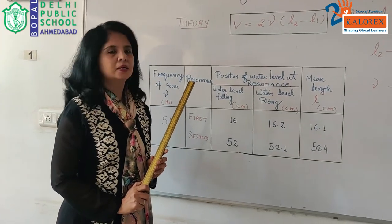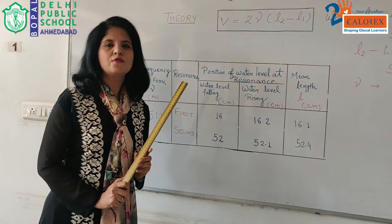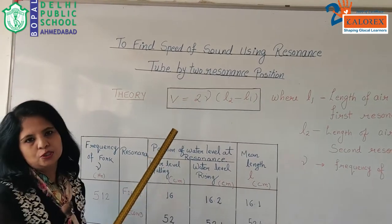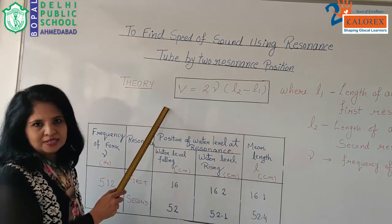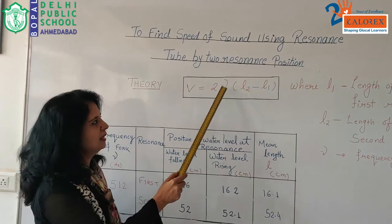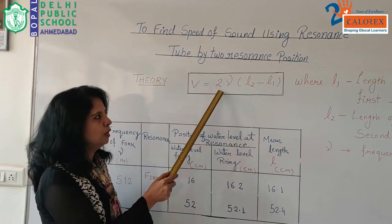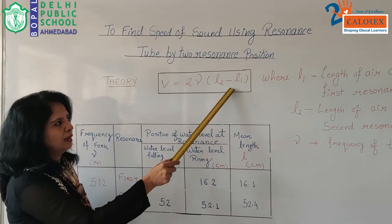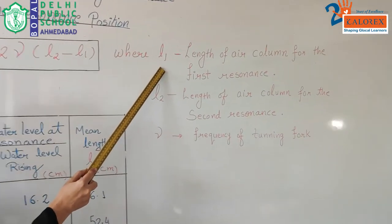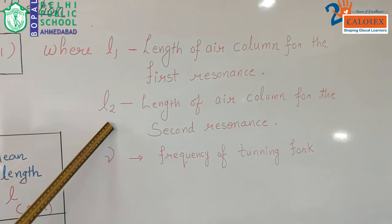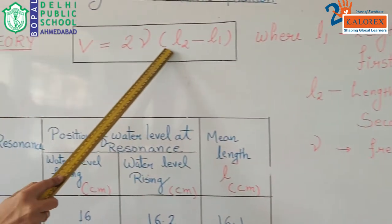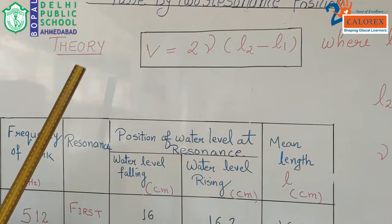Hello children, today we are going to understand how to find the speed of sound in air by using a resonance tube with two resonance positions. To find out velocity, we know that velocity depends upon frequency and the difference in the length of the resonance. The formula is V = 2ν(L2 - L1), where L1 is the length of the air column for the first resonance, L2 is the length for the second resonance, and ν represents the frequency of the tuning fork. By finding these resonance positions, we can calculate velocity.